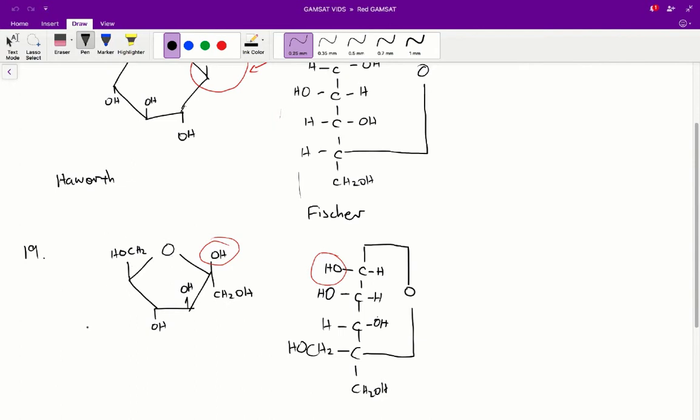A is incorrect because the first OH is on the wrong side. C is incorrect because the second OH is on the wrong side. And D is incorrect, again, because that second OH is on the wrong side and it's lacking the CH2OH on the first carbon. So that's how you answer question 19.